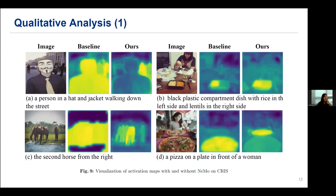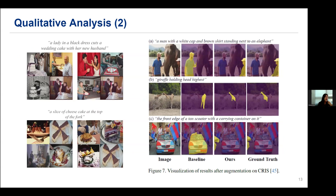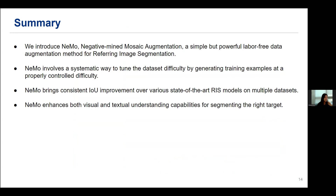Interestingly, when you look at the final activation map of the model trained with augmentation, we can see clearer boundaries and more accurate reference locations — something that previous models struggled to detect. Here are a few NAMO augmentation examples and the results before and after applying NAMO. Here's the overall summary of our pipeline. Please refer to the ablation and appendix for more details. Thank you for listening.